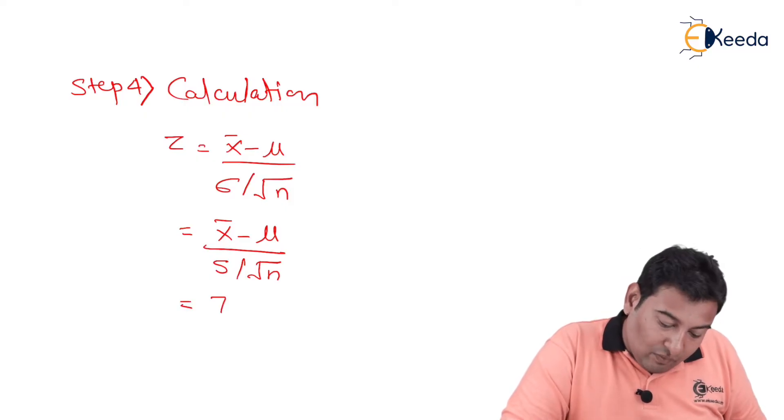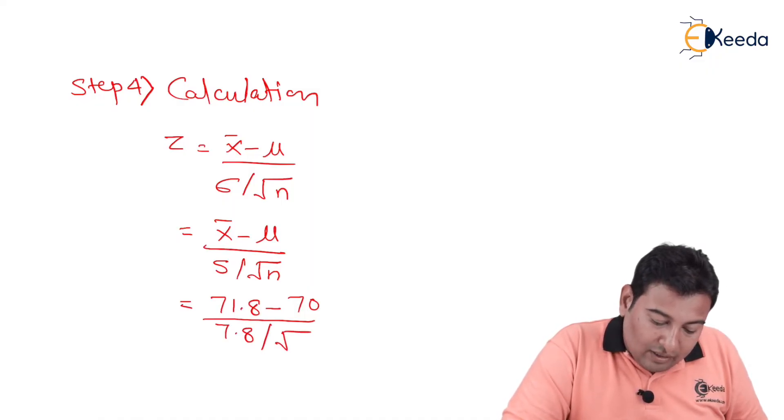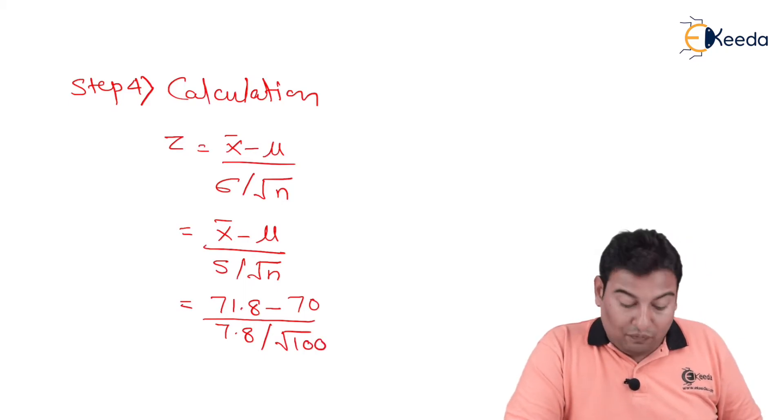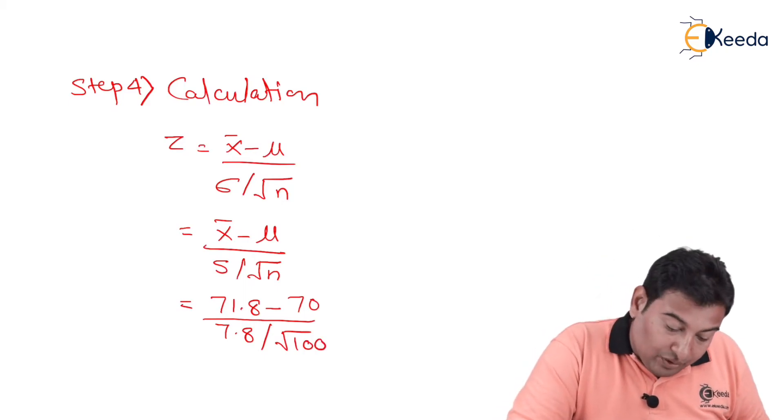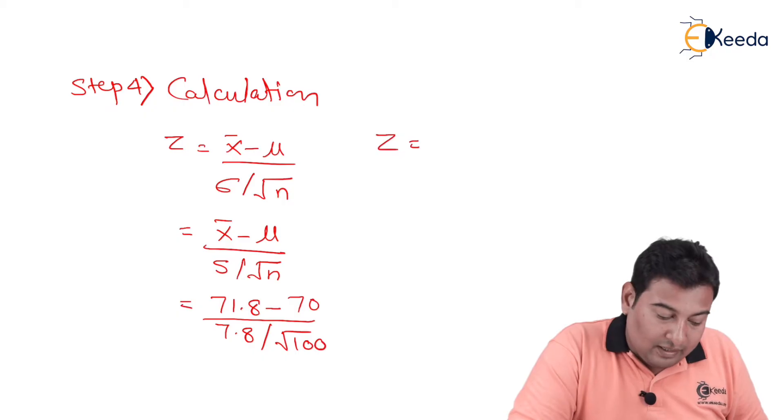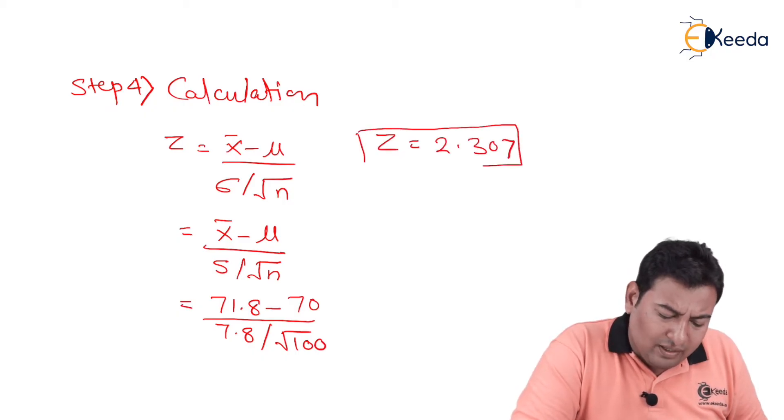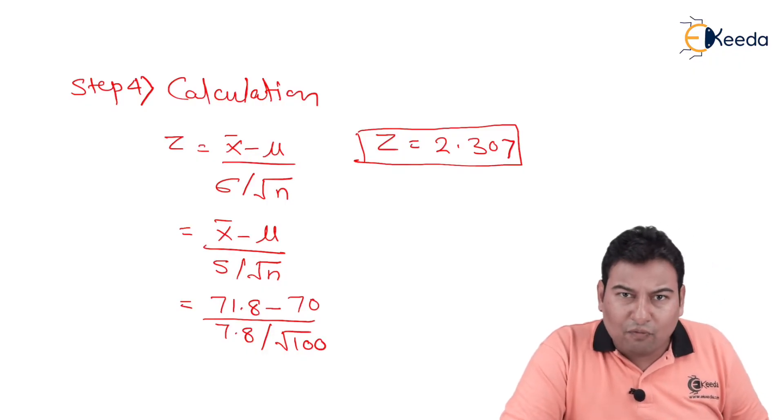So in this problem, x̄ is equal to 71.8, μ is equal to 70, S is equal to 7.8, root n is root of 100. So if you solve in calculator, you will get the value of Z is equal to 2.307. You can try solving it, you will easily get. So step number 4 is also done.